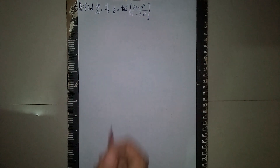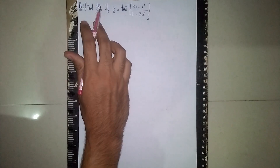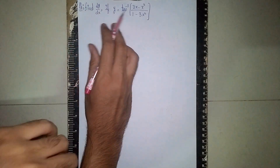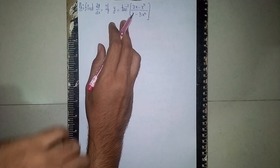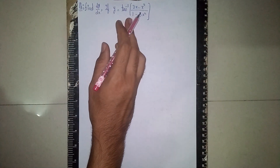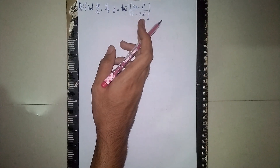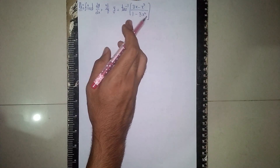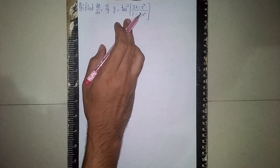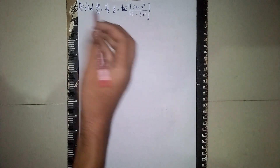Hello students and welcome back to my channel. This question is: find dy/dx if y is equal to tan inverse of (3x minus x cubed) by (1 minus 3x squared). This is our differentiation question.